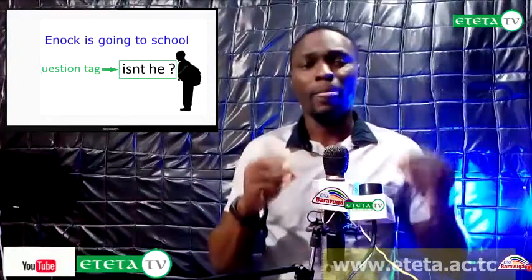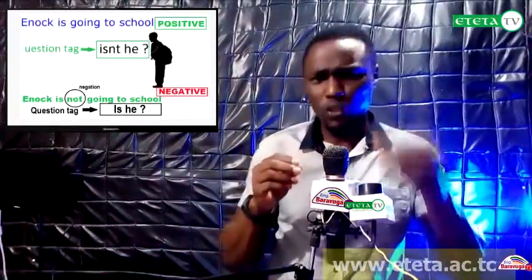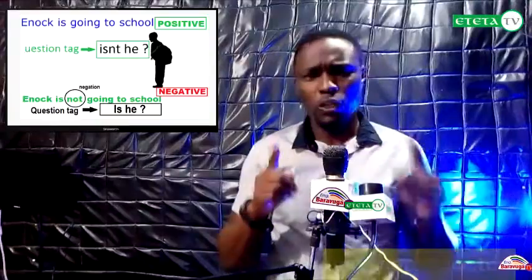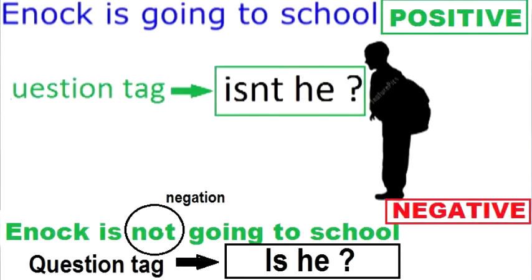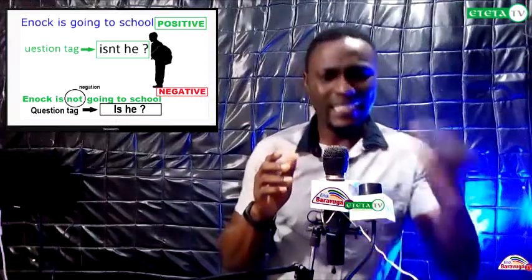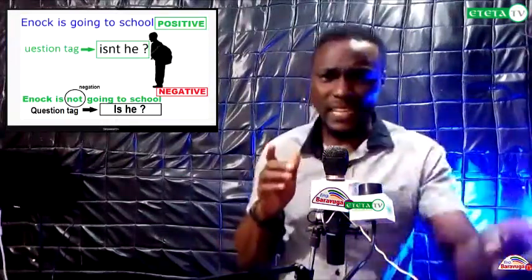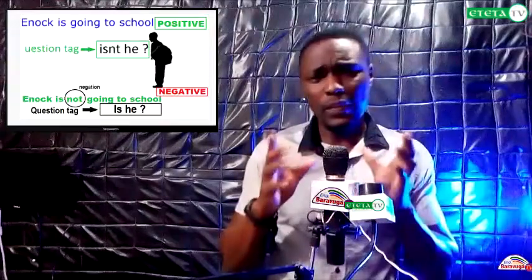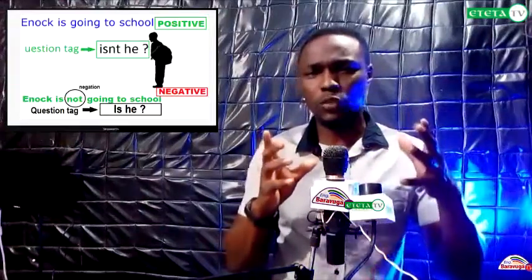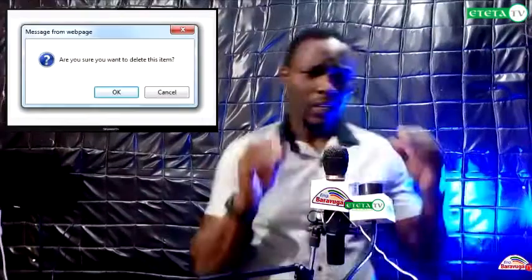One more example: making the affirmative 'Enoch goes to school' negative gives us 'Enoch does not go to school.' Adding a question tag on this negative statement, it becomes: 'Enoch does not go to school, does he?' You can see the purpose of question tags is to confirm the statement.